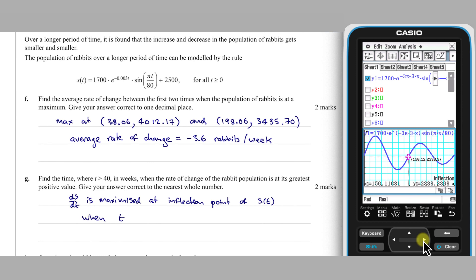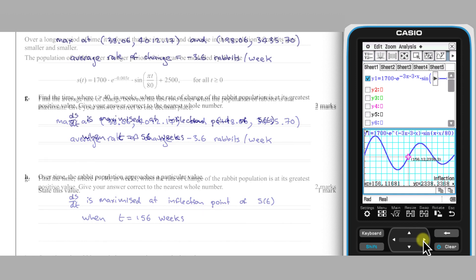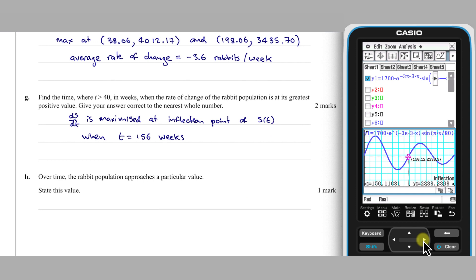Part H: As time passes, the amplitude of this population will decay towards zero, so the population will approach the value of its principal axis, which is 2500.